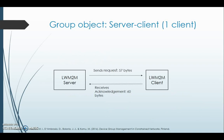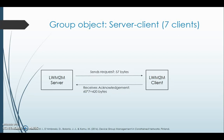In the group object scenario with one server and one client, the LWM2M server sends a request to the client of 57 bytes and the client gives an acknowledgement back to the server of 60 bytes. In the next scenario with seven clients, when the LWM2M server sends a request of 57 bytes, the clients reply with an acknowledgement of 60 multiplied by 7, which is 420 bytes.